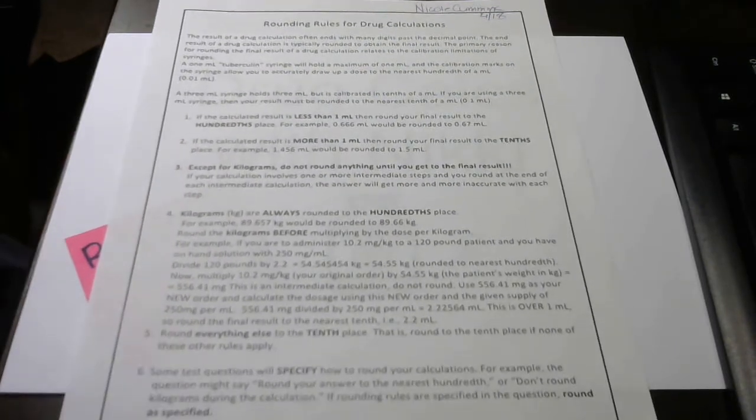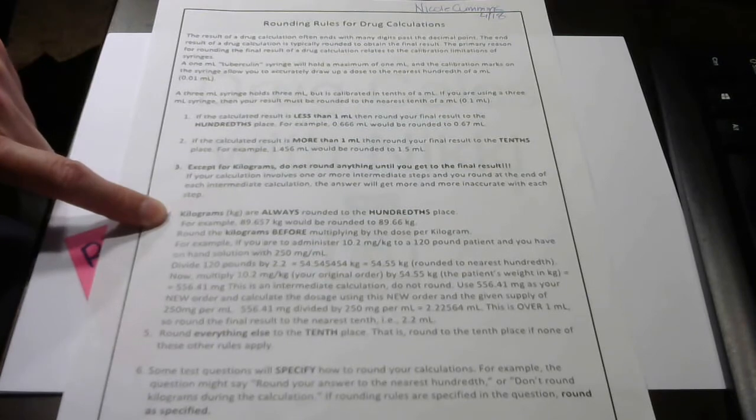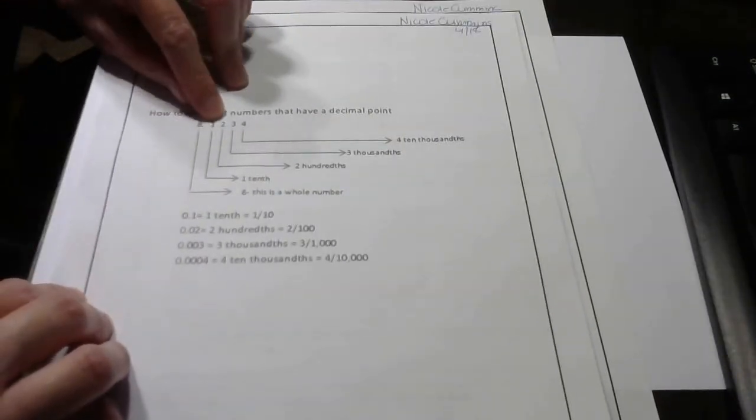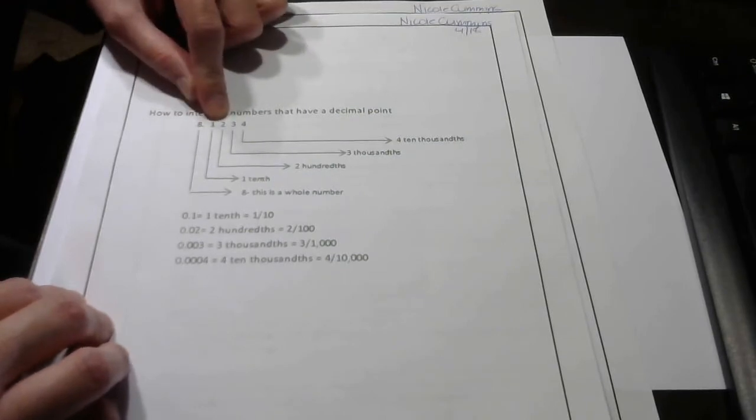And then it says here that kilograms are always rounded to the hundredths place. So again, the hundredths place is the second number to the right of the decimal.